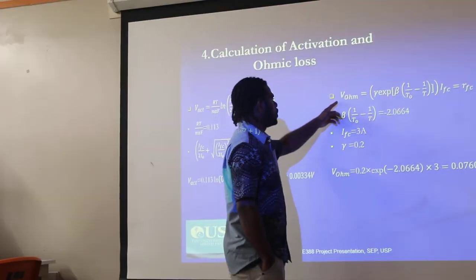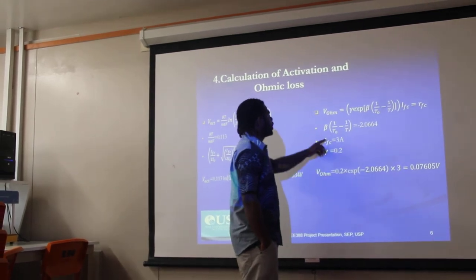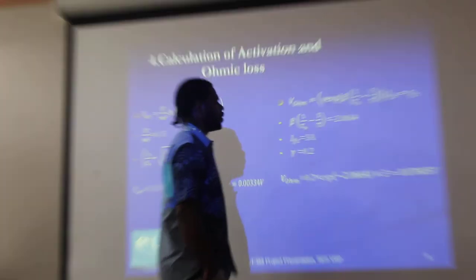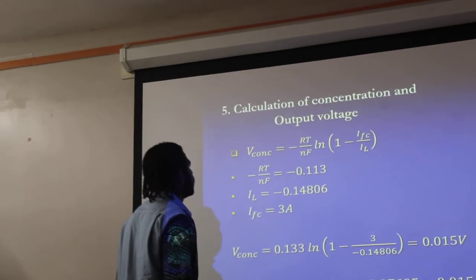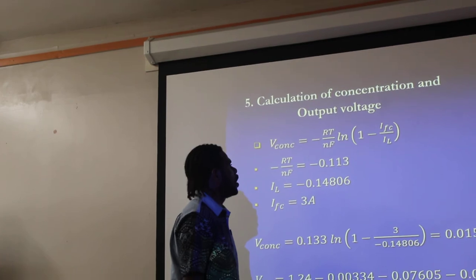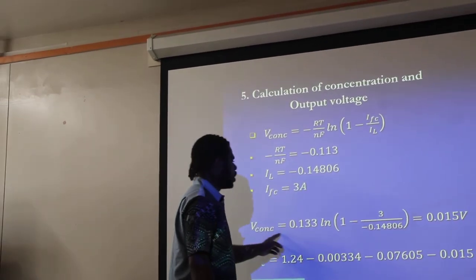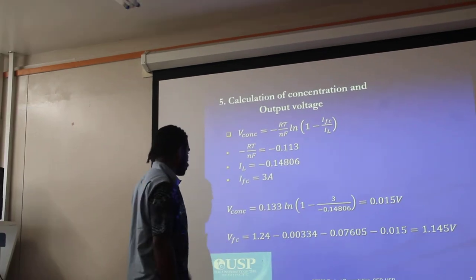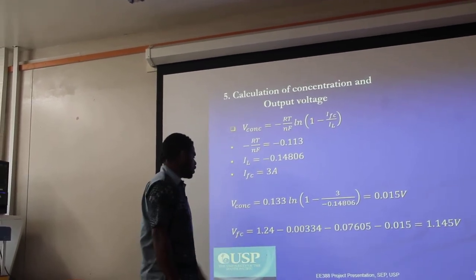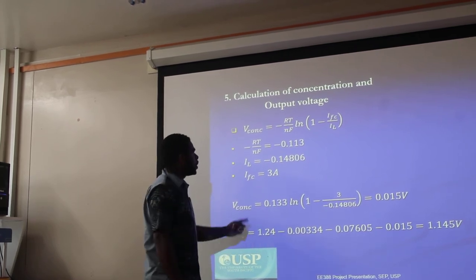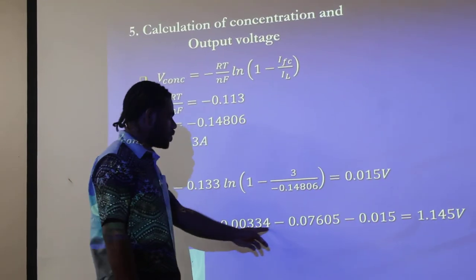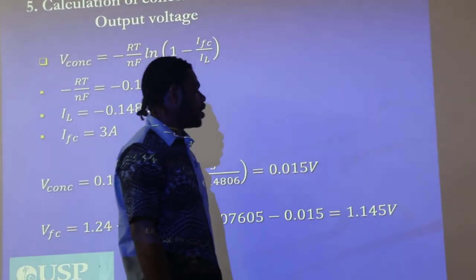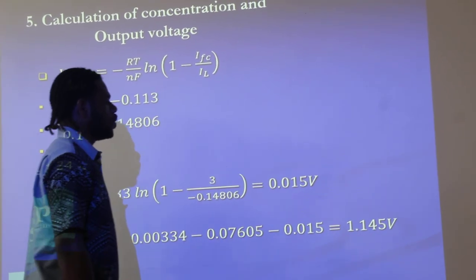For the ohmic voltage, the formula is given, and after applying a current of 3 amps, the value obtained is 0.076054 volts. The calculation of concentration voltage is also carried out, which gives 0.0154 volts. Combining all those losses, the value of the output voltage is calculated based on the formula: Nernst voltage minus the concentration voltage, minus the ohmic voltage, and minus the activation voltage, which gives 0.1454 volts.